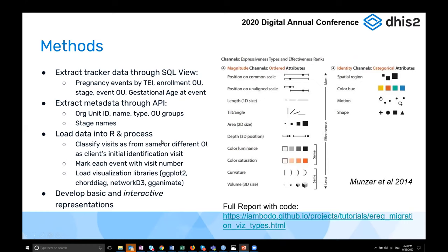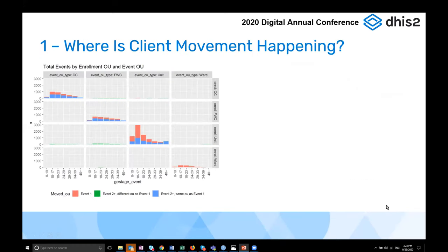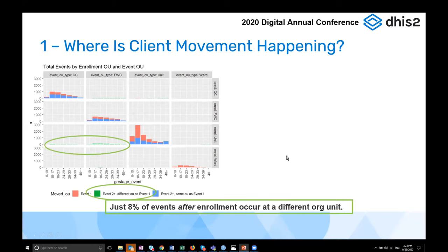Looking at which types of org units actually enroll clients and where they are followed up: in a faceted grid, the top axis shows event organization types and the right shows where they're enrolled. Here is where most of the action happens — the event occurs at the org unit and the enrollment happens at the same org unit. Colors represent whether this is the first event or a follow-up event. There is really not a lot of crossover between different org units — in fact, just 8% of all events after enrollment occurred at a different organization unit than where they were initially enrolled.